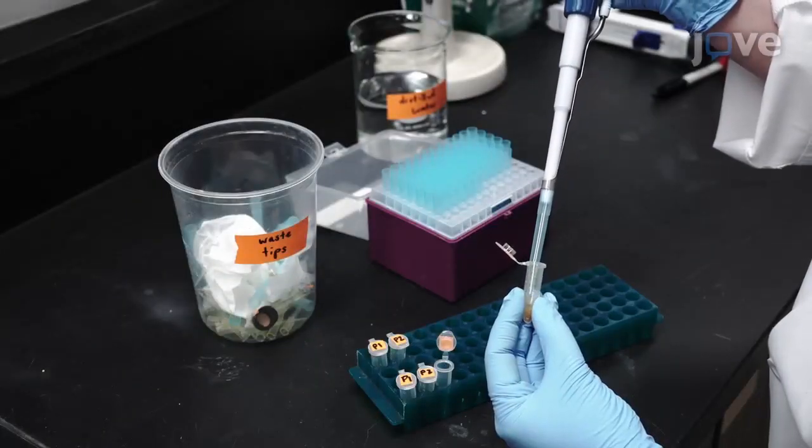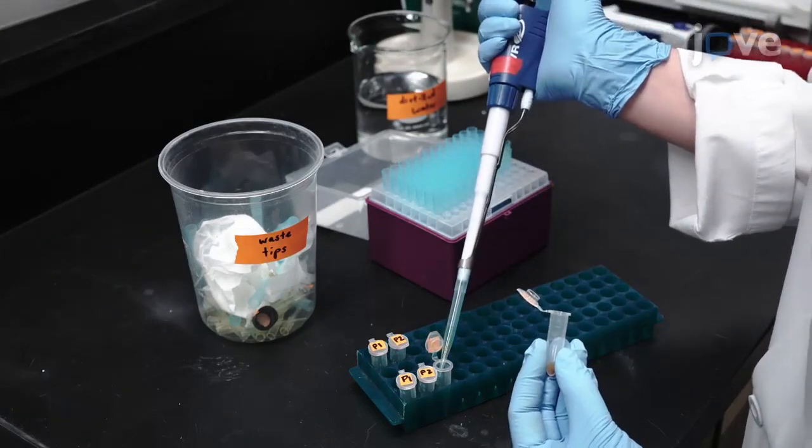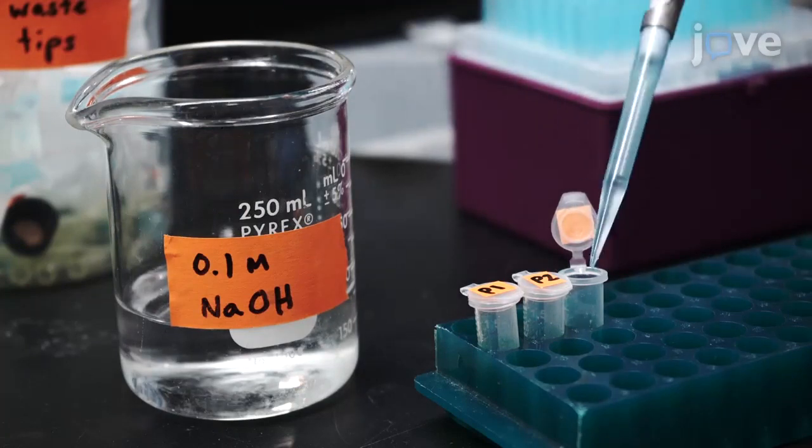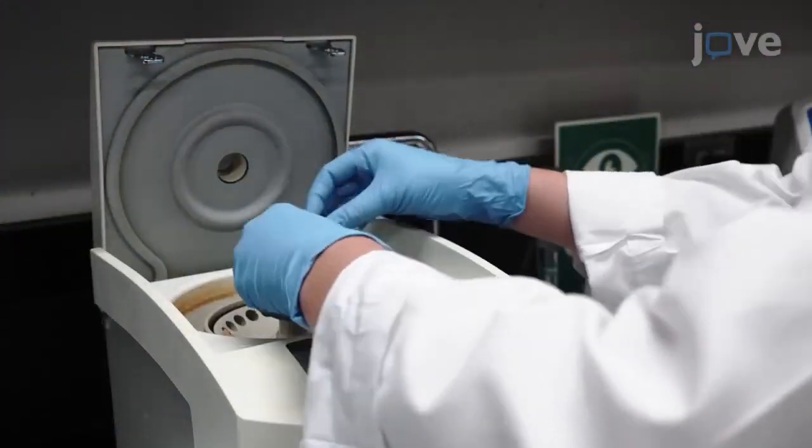Pipette the supernatant into new labeled microcentrifuge tubes using a new pipette tip for each sample. Add 300 microliters of 0.1 molar sodium hydroxide to the pellet and repeat the centrifugation for 10 minutes.